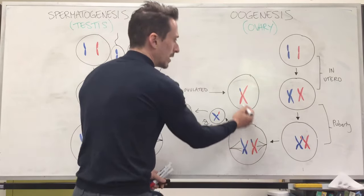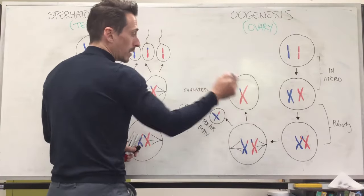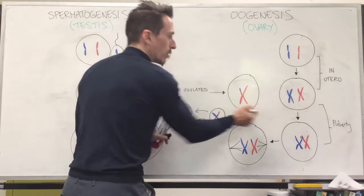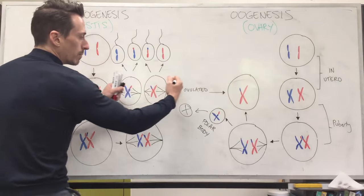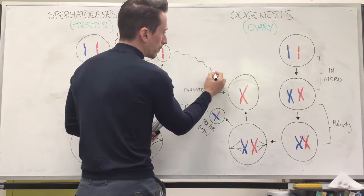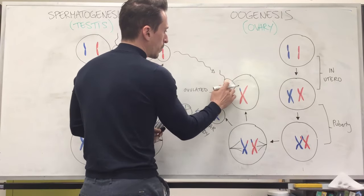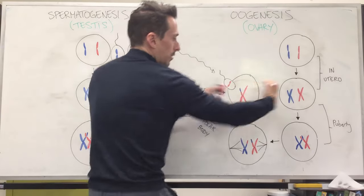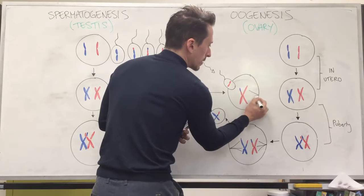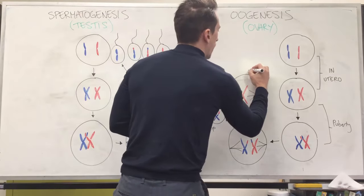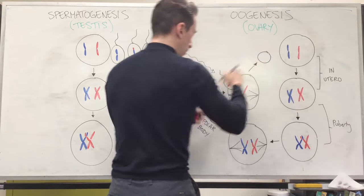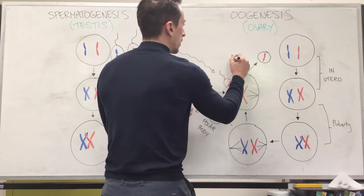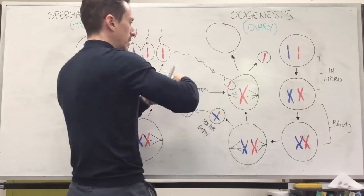Now what we're left with is one viable cell — this is actually the egg cell that gets ovulated every single month. You can see it has double the DNA here, very different to the sperm. This is what's ovulated, and it doesn't undergo the next process of being pulled apart until one of these sperm comes along and fertilizes it. If the sperm fertilizes it, it stimulates the process for it to undergo the next splitting, and those little guy wires pull it apart to produce another small polar body which gets discarded.